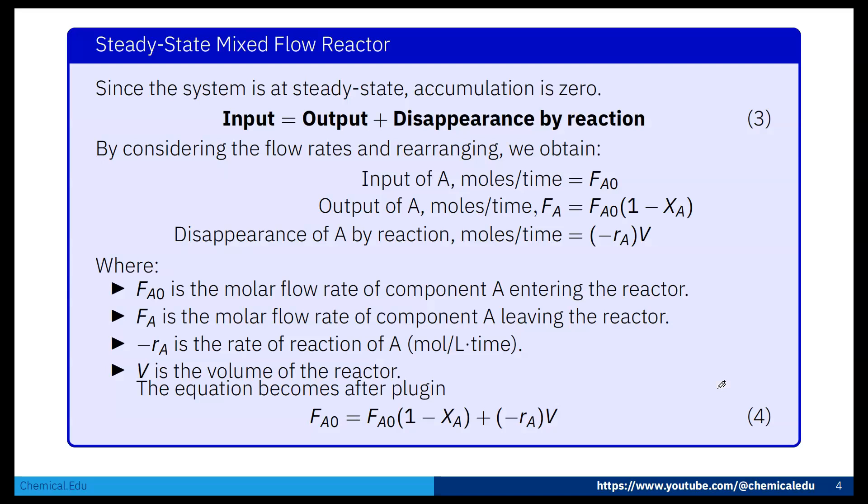Now since the system is at steady state, accumulation is zero. So we know all these things. Now FA0 is the molar flow rate of component A entering the reactor. So this is the reactor. And this is the inflow, that is FA0, and output flow rate is FA.